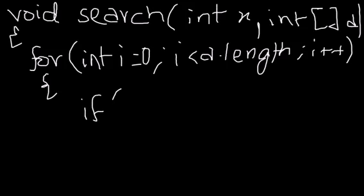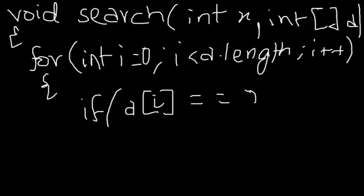Let's say if a[i] equal equal to X, what does this line do? This line basically says that if the element at this position, at the ith position, is equal to what the value of X here is.